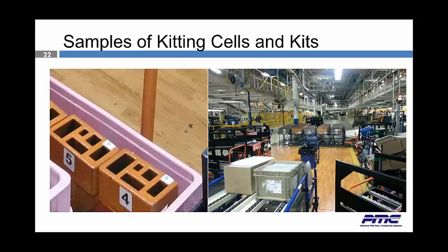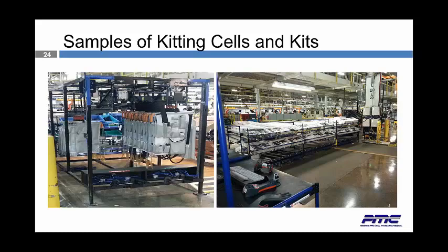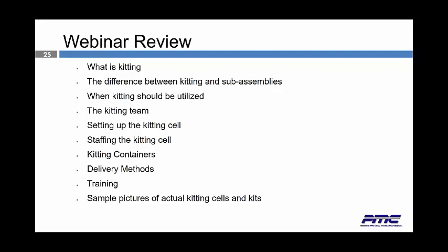Here are some samples of kitting cells. You can see the ergonomic flooring and the different racks set up in different locations, as well as some of the different kit boxes utilized. Not all kitting cells are the same — some are large, some are smaller, some contain bags. One shown here is a kitting cell actually feeding line-side. In review, this webinar covered: what is kitting, the difference between kitting and subassemblies, when kitting should be utilized, the kitting team, setting up a kitting cell, staffing the kitting cell, kitting containers, delivery methods, training, and sample pictures.